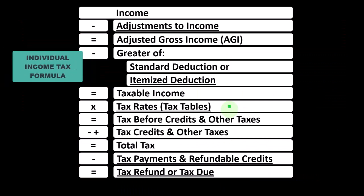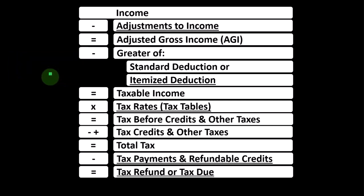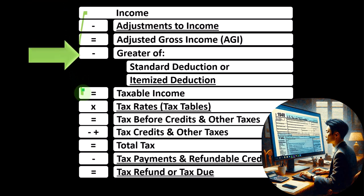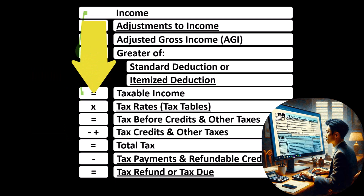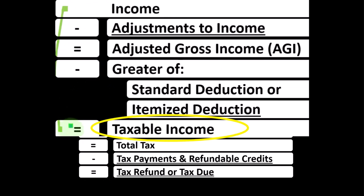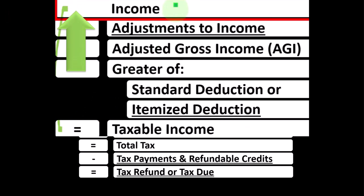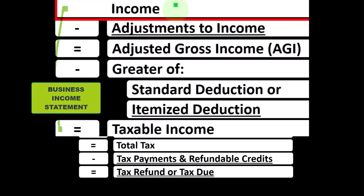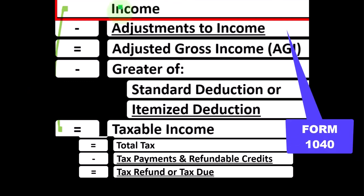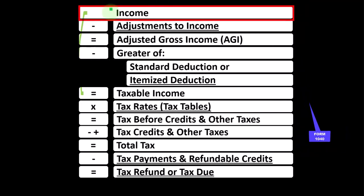Looking at the individual income tax formula, basically mirroring the calculation on the Form 1040, the first half of which is kind of like a funny income statement. Most income statements have income minus expenses resulting in net income. This income statement has income minus deductions resulting in taxable income. When we're thinking about a Schedule C, we're focused on line one income of the 1040 income tax formula.